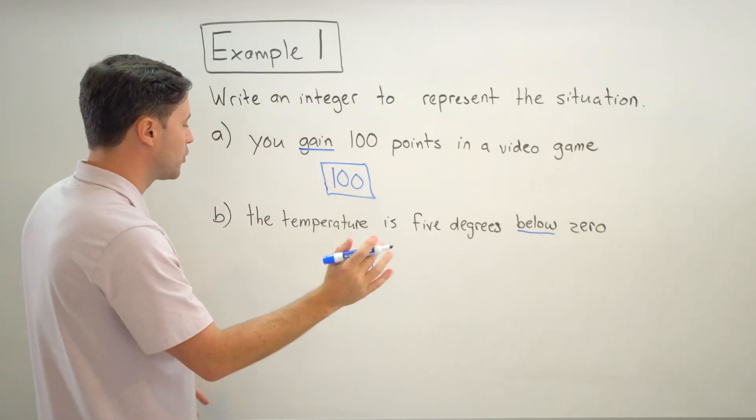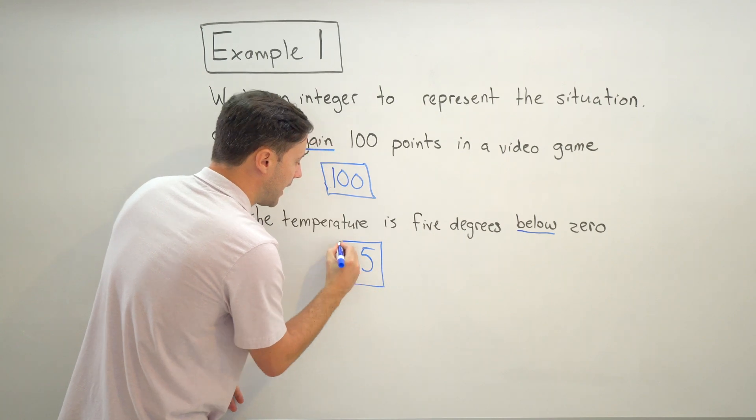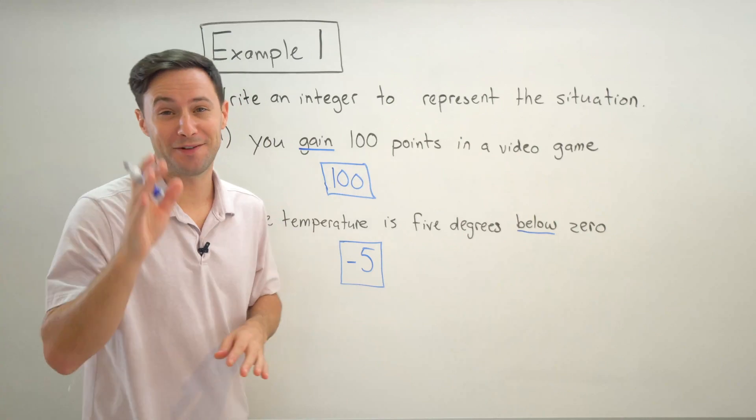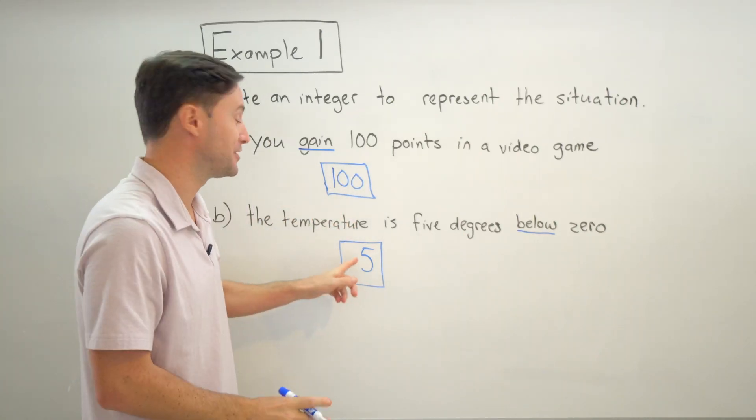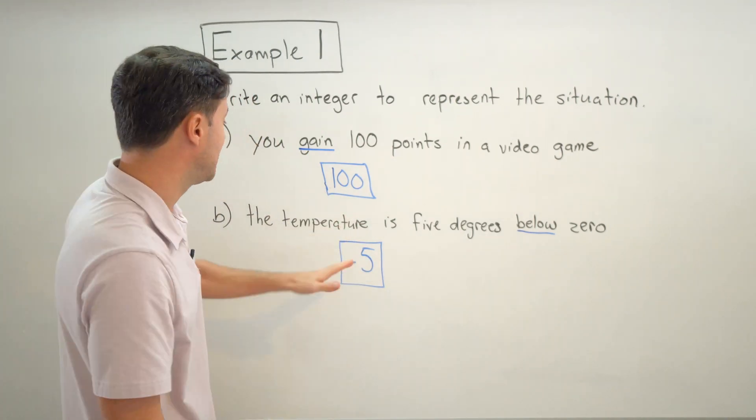And since the instructions only said to write an integer, I don't have to worry about units or anything, so I'm just going to write negative five. Notice I said negative five. Teachers hate it if you say minus five, so just heads up - don't say minus five when it should be negative. Minus is an operation, not a sign.